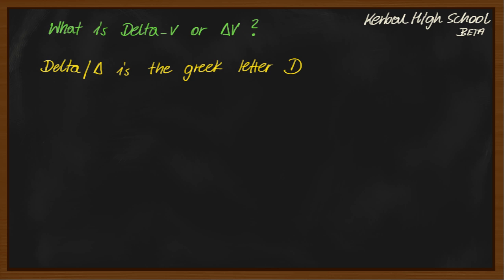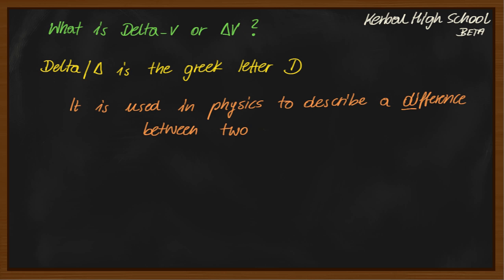Delta v is the Greek letter D, the capital one. It is used in physics to describe a difference between two values.